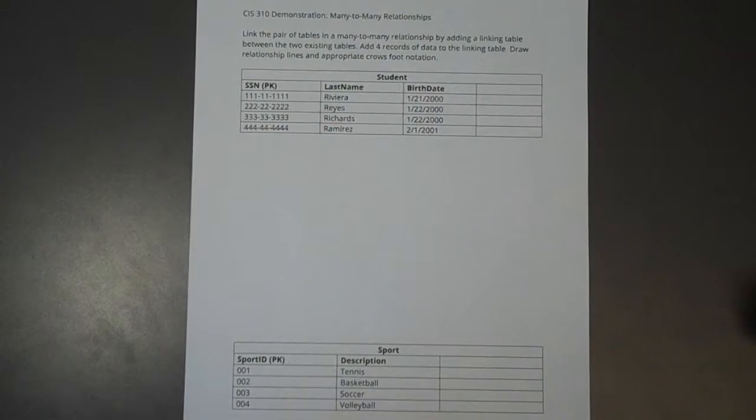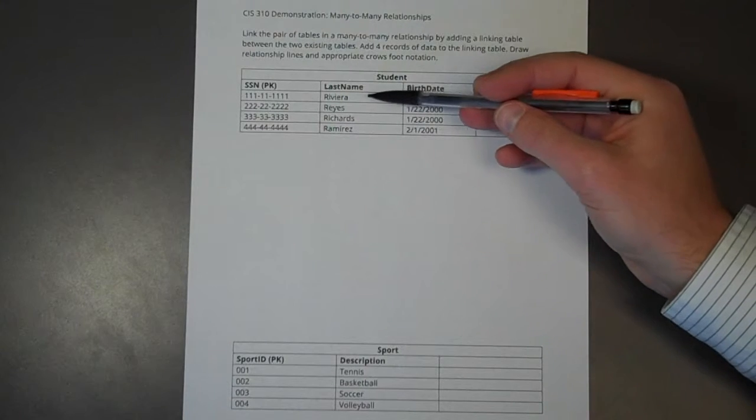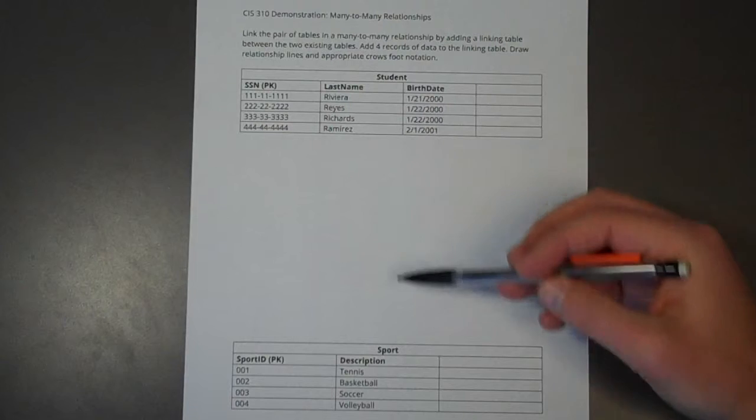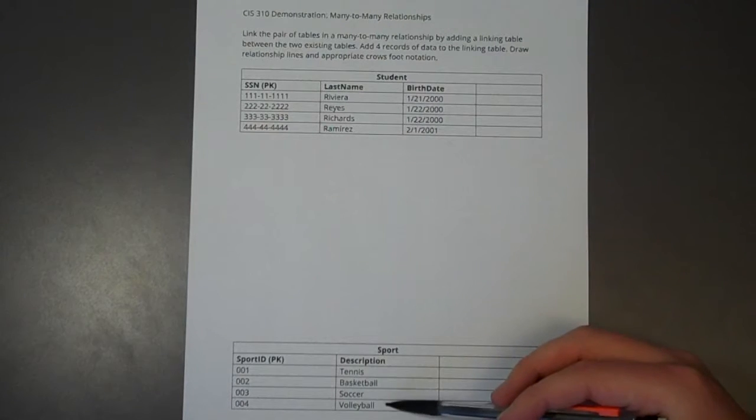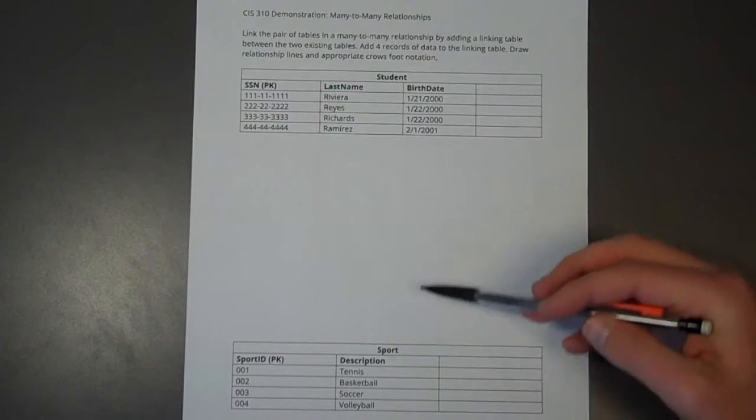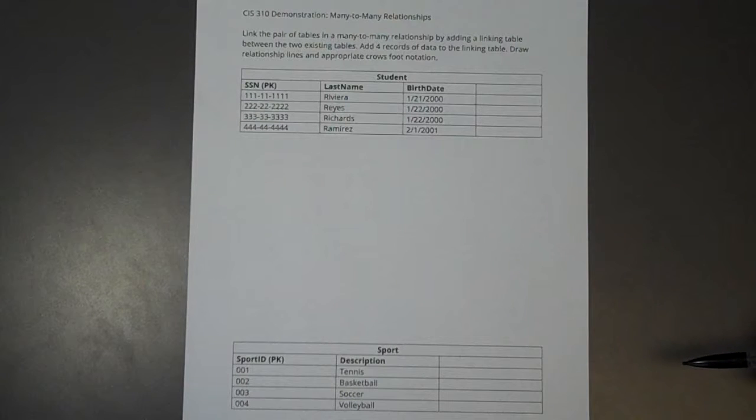So let's do just that. I have students and sports here. So many students can play many sports, and many sports are played by many students. A single student, Riviera, can play many different sports. And one particular sport, say volleyball for instance, could have many students playing that sport. So we have a many-to-many relationship.